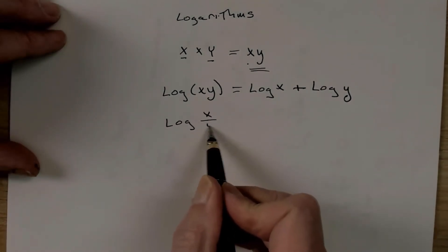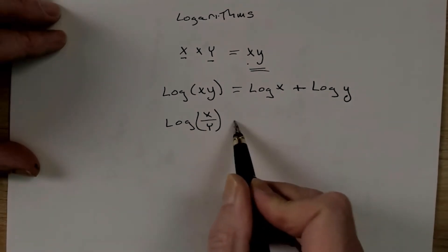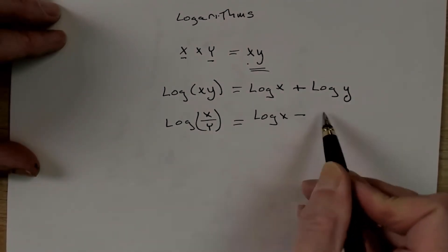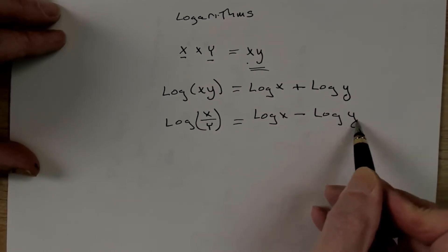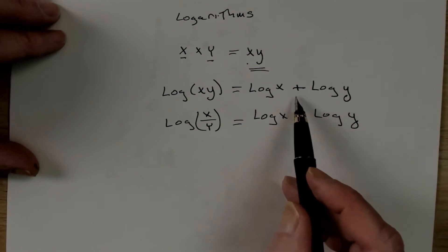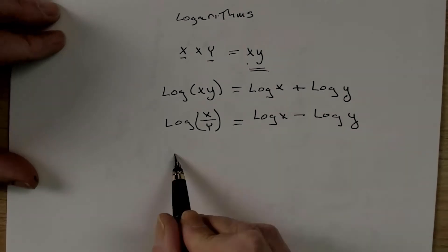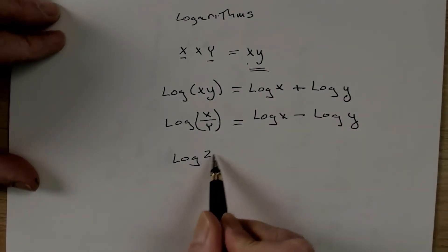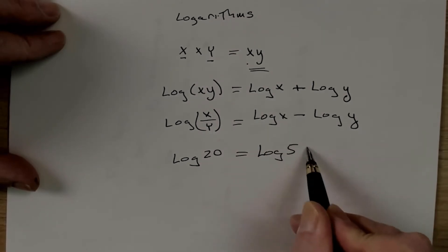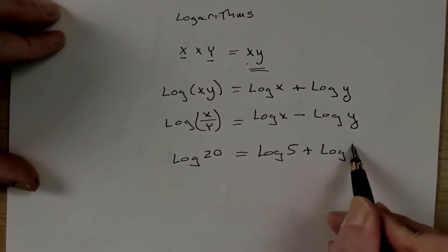Likewise, log x divided by y equals log x minus log y. So you see, we take multiplication and division and turn it into addition and subtraction. log of 20 equals the log of 5 plus the log of 4.